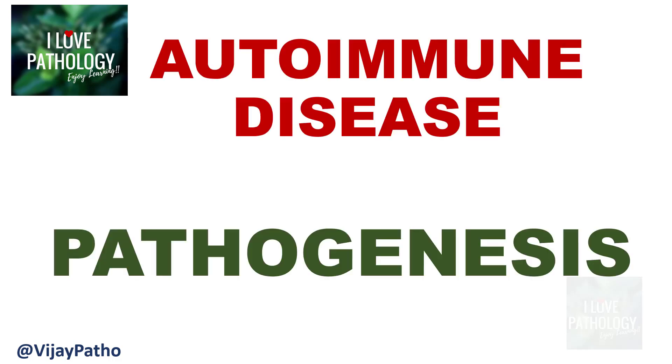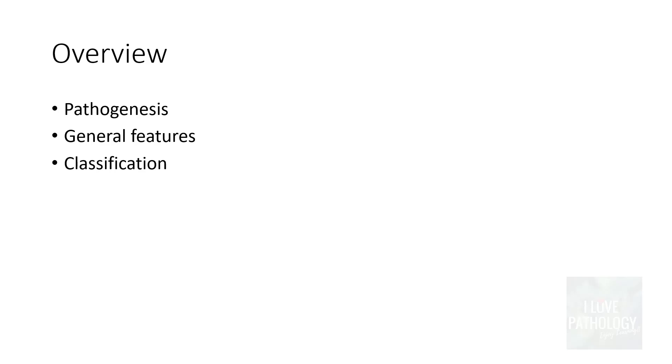In continuation with the autoimmune diseases, this is part two of the autoimmune disease series where we will understand the pathogenesis of autoimmune diseases. We will look into the pathogenesis, the general features of autoimmune diseases, and how autoimmune diseases can be classified.